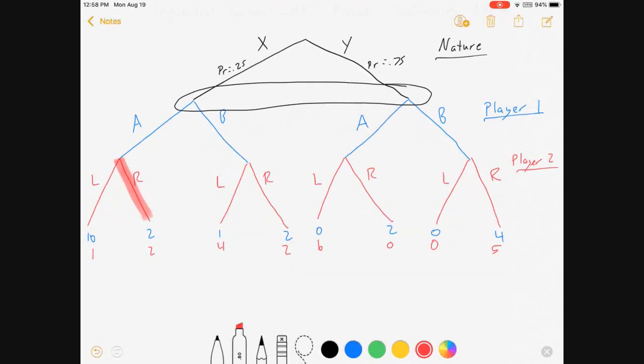Now if nature goes X and player one goes B, we'll be at this node, and four is better than two, and so player two will go left. Likewise for YA, player two goes L, and for YB, player two goes right. Okay, there's player two's strategy set. Any Bayesian Nash equilibrium has to include player two making those strategies.